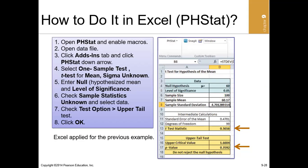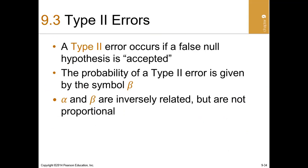The final topic in hypothesis testing is errors. Type II error occurs when we fail to reject — or when we accept — a false null hypothesis. The probability of rejecting a true null hypothesis is alpha, which is why we call it the significance level. So if alpha is 0.05, then beta is 0.95.